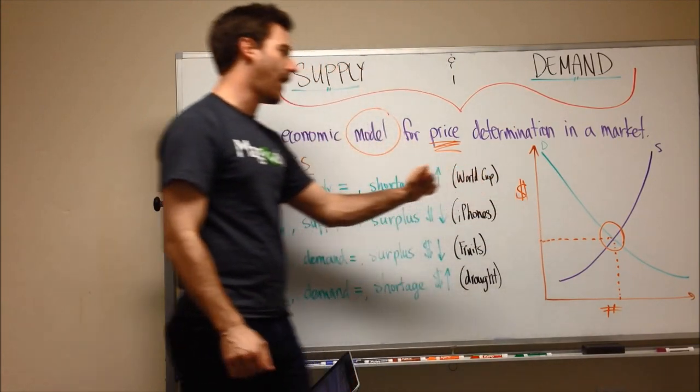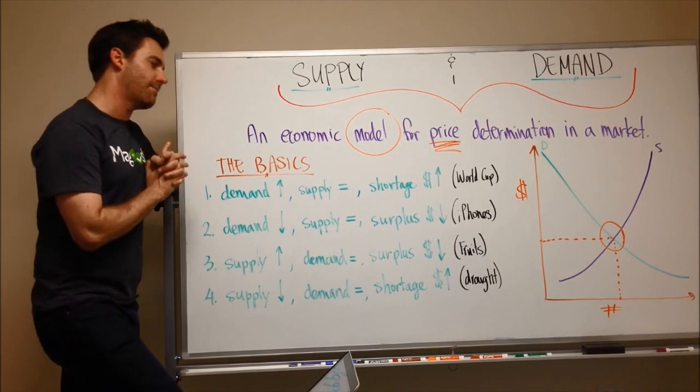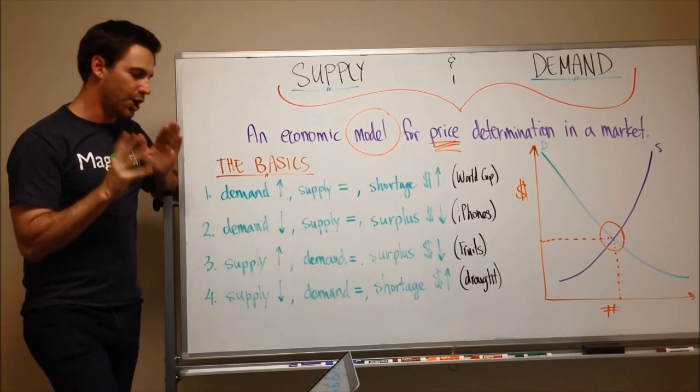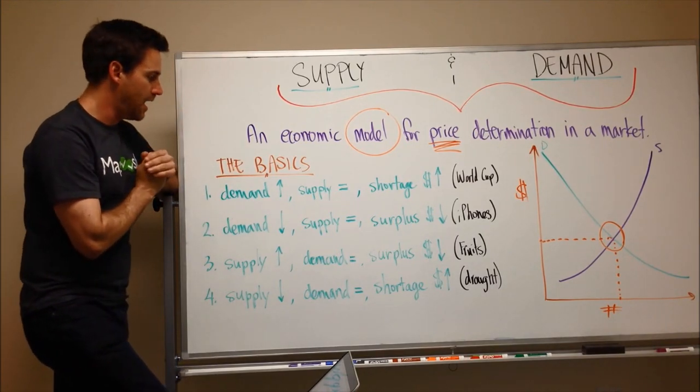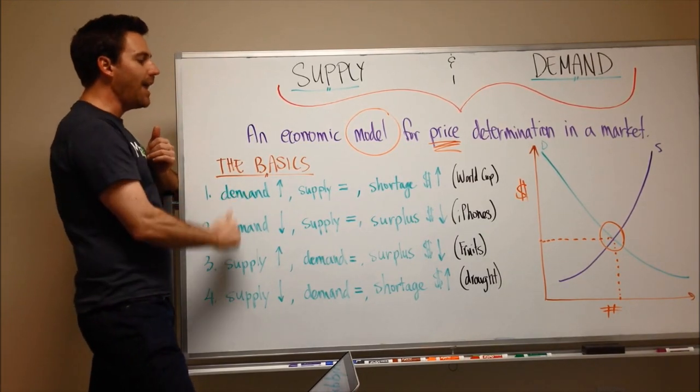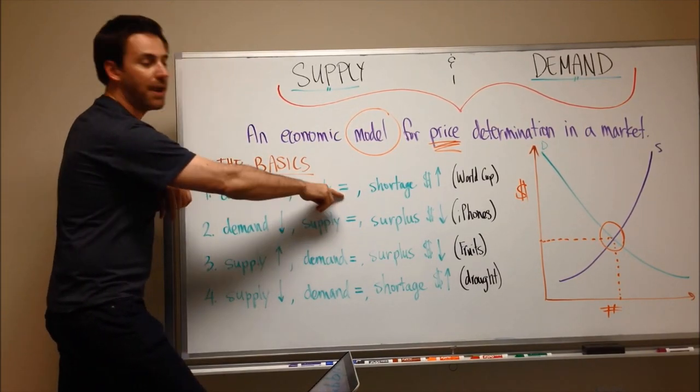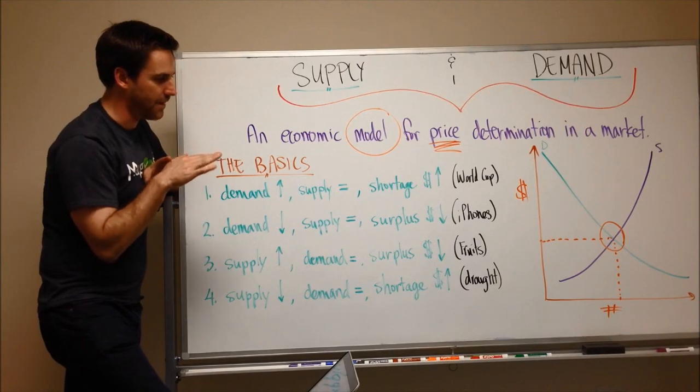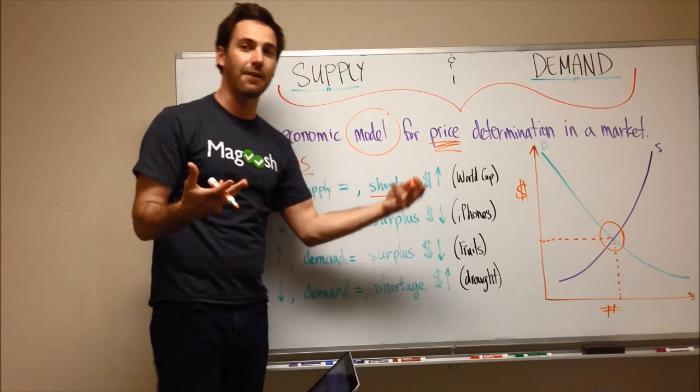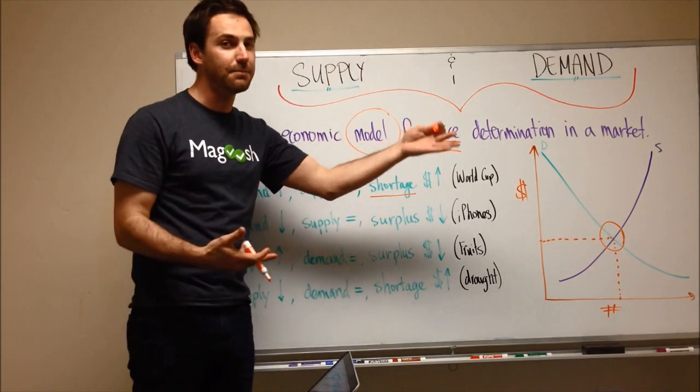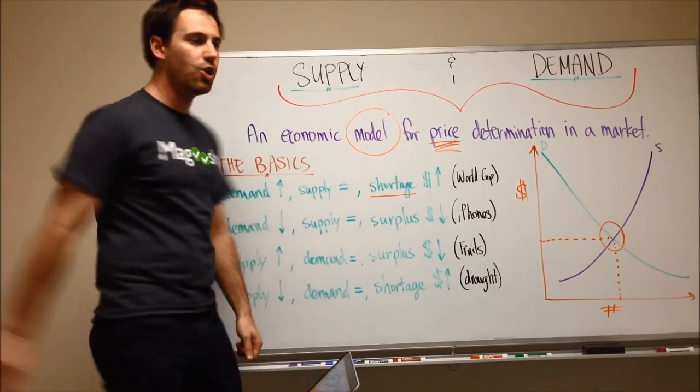But moving on, I'd like to talk more about just the basics of supply and demand, some fundamental concepts that are good to know about. So there's four basic concepts. The first one is if demand goes up for something and supply remains equal, stays the same, you're going to have a shortage, which means you're not going to have enough to supply the people who want the thing. And the price will go up.